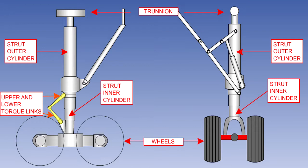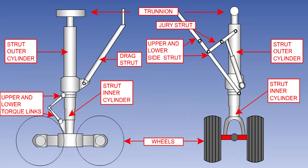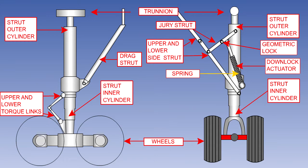The wing gear torque links prevent rotation between the shock strut inner and outer cylinders without affecting their reciprocating action during normal operation of the strut. The drag strut, as shown here, supports the leg in a fore and aft direction. The upper and lower side struts support the leg laterally. They fold out when the gear is lowered and are then held in place by the jury strut, which also folds out during extension. The jury strut is pulled over-center by the downlock actuator, geometrically locking the gear down. If the gear is lowered without hydraulic power, the over-centering action will be performed by an internal spring in the downlock actuator.